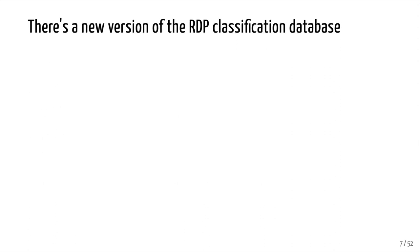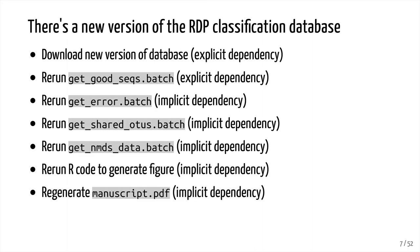If there's a new version of the RDP classifier, we'd have to download the new version of the database — an explicit dependency. We'd then have to rerun getgoodseeks.batch because there's a step where we remove sequences that are chloroplasts or mitochondria. We'd also update our taxonomy assignments for each OTU. We'd have to rerun geterrorbatch, because it's affected by how we've perhaps removed sequences based on their taxonomy. We'd then rerun getsharedotusedbatch and getnmdsdatabatch — each of these is an implicit dependency, because data generated upstream is affected by having a new reference taxonomy. And again we'd have to regenerate our R code, figure, and manuscript.pdf.